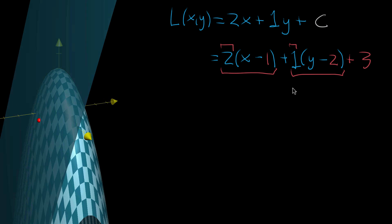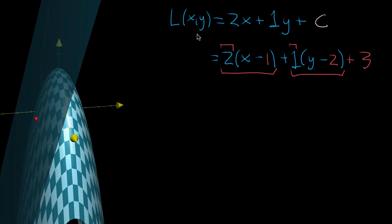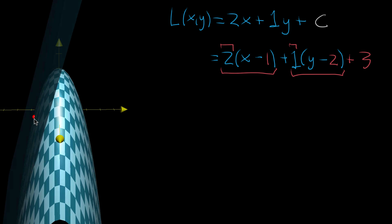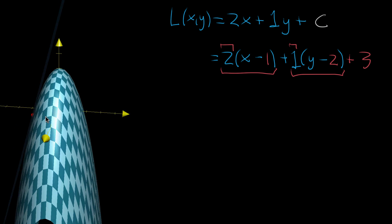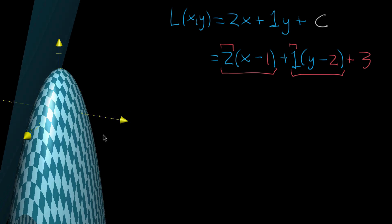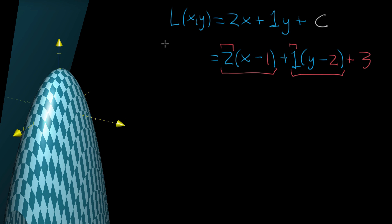In the last video I was talking about how you can define a function whose graph is a plane — a plane that passes through a specified point and whose orientation you can somehow specify. We ended up seeing how specifying that orientation comes down to certain partial derivative information. Let me repeat what the conclusion was, but in more abstract terms since I did it with a very specific example last time.